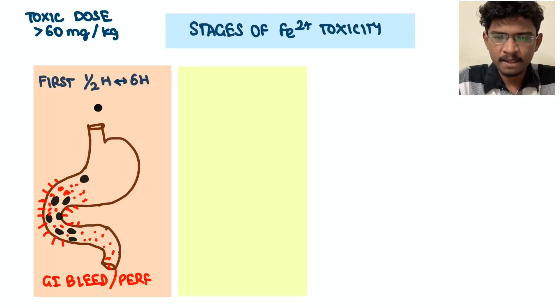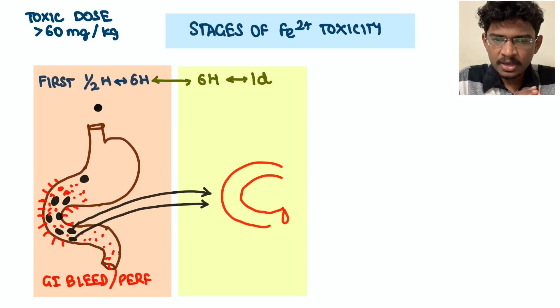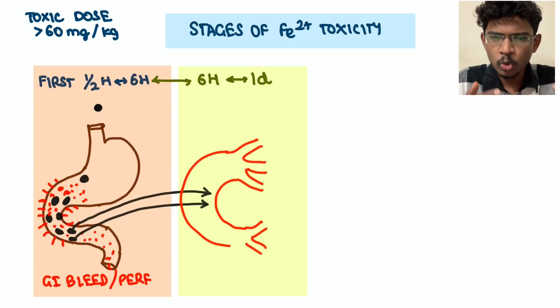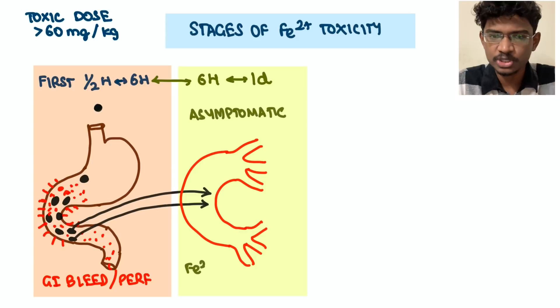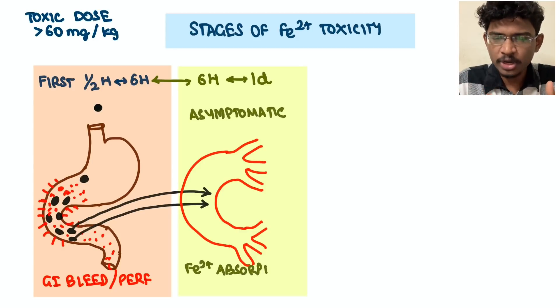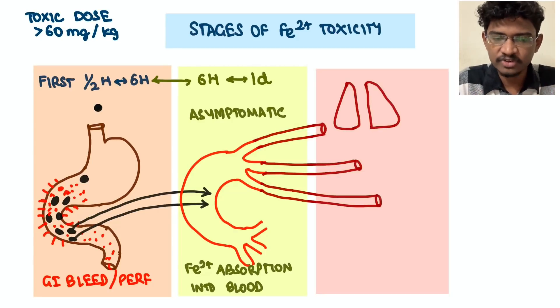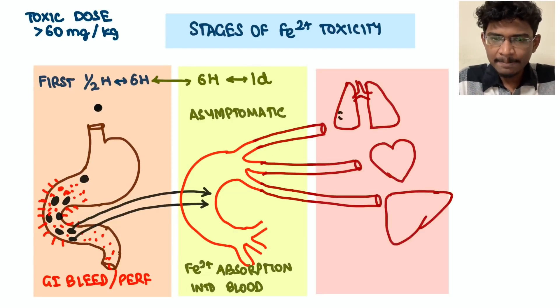After 6 hours, whatever iron which has been ingested it will be slowly getting absorbed. At this stage it will be absorbed into the blood circulation. So at this point of time the patient will be completely asymptomatic. You can't discharge the patient at this point of time.